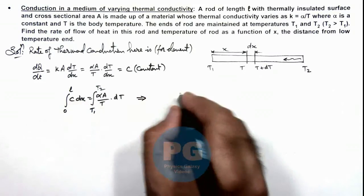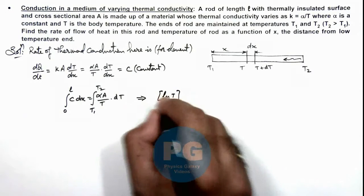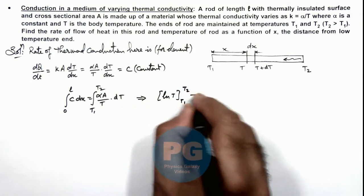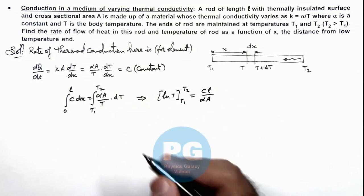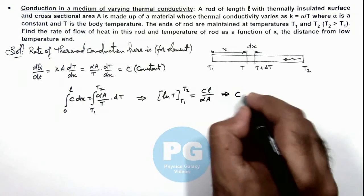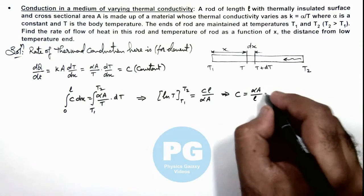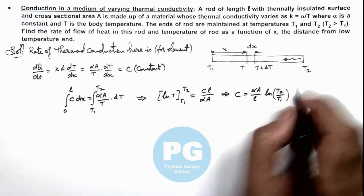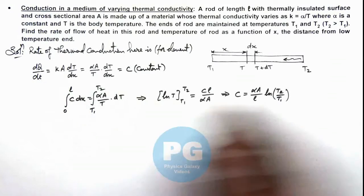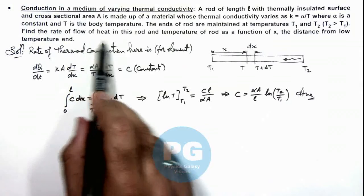And this relation gives us ln T within limits from T1 to T2 is equal to cL/αA. So here this is giving us the value of c as αA/L multiplied by ln(T2/T1). That is the rate of flow of heat. This is one result of the problem we are required to find, the rate of flow of heat in this rod.